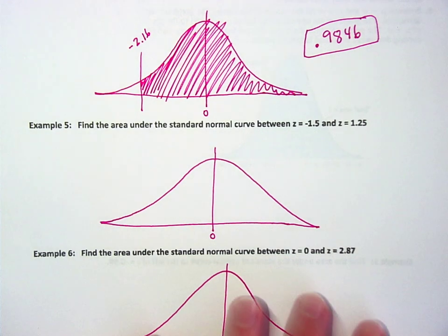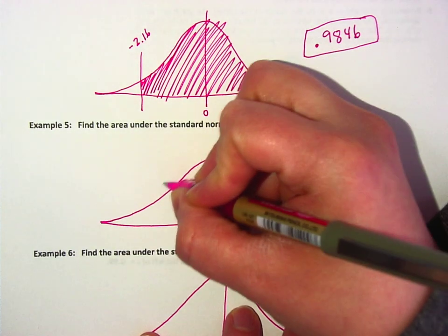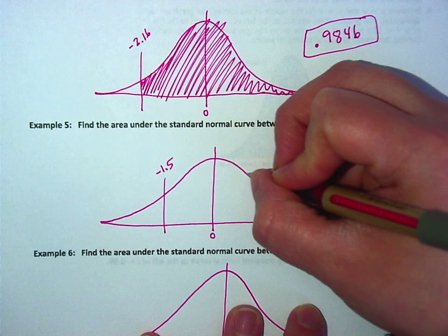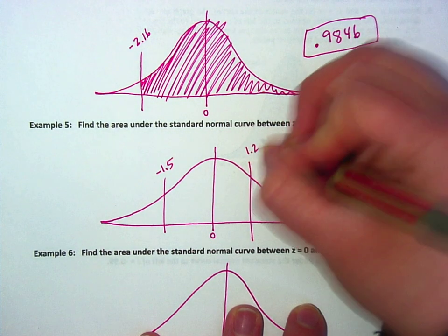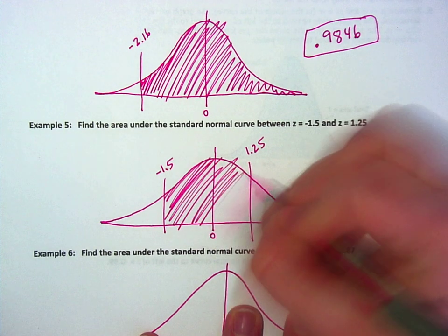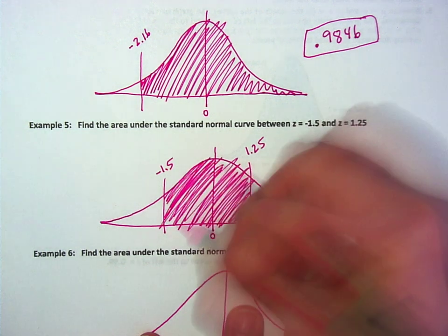Alright, so this time we're going to find the area between. So let's see, we've got about negative 1.5, which is like here, and then 1.25, which is a little closer, maybe right there. I'm trying to find the area between these two.